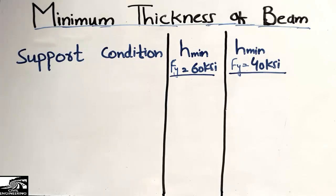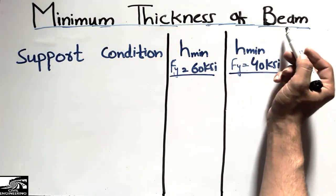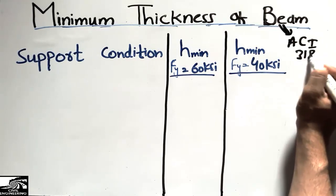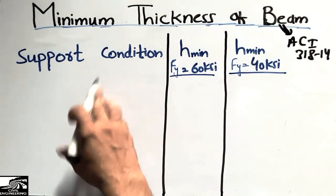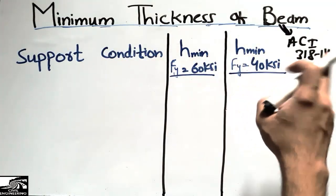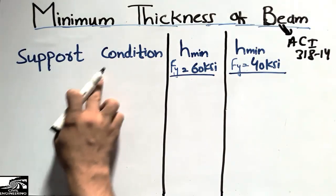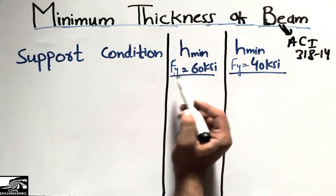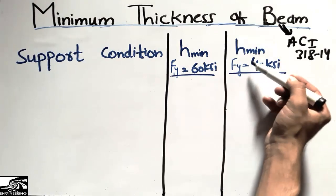Welcome back to the C1 Engineering YouTube channel. Today our lecture is about the minimum thickness of beams as per the ACI 318-14 codes. I will show you the minimum depth or thickness of beams per ACI recommendations, covering the support conditions and beam types, for both Grade 60 and Grade 40 steel.